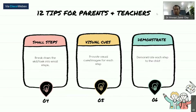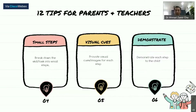The next tip is visual cues. For non-verbal children with autism, visual cues are very important. You can use picture images for each step, or you can use a social storybook. The following tip is to demonstrate each step to the child — before you want the child to perform a step, demonstrate it to them and let them see the step first.